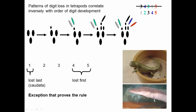When you look at caudates that have reduced limbs with reduced digits, they develop one, two, three, four, five — and four and five are the first ones lost. When they evolve down to one digit, it's digit one that remains. This is like an exception that proves the rule: there's nothing magic about digit number three. It really is the pattern of development that's guiding the type of evolution that occurs.